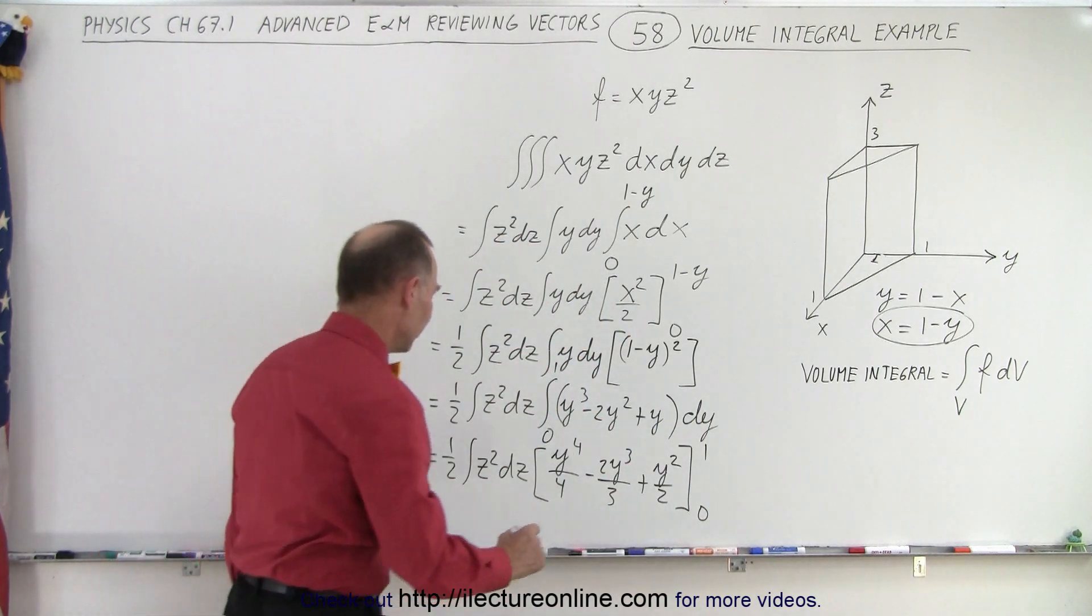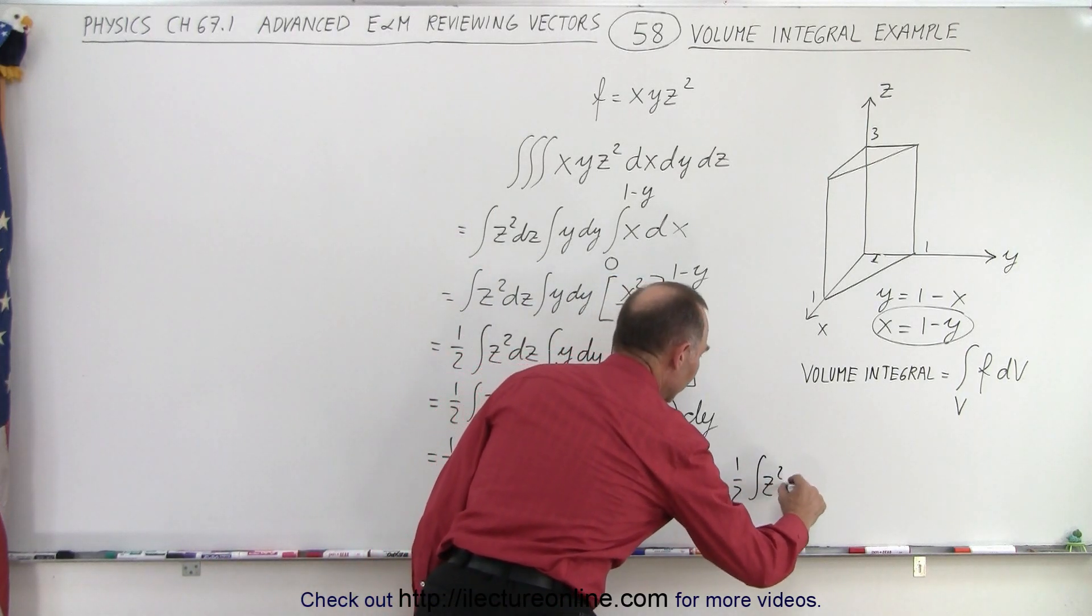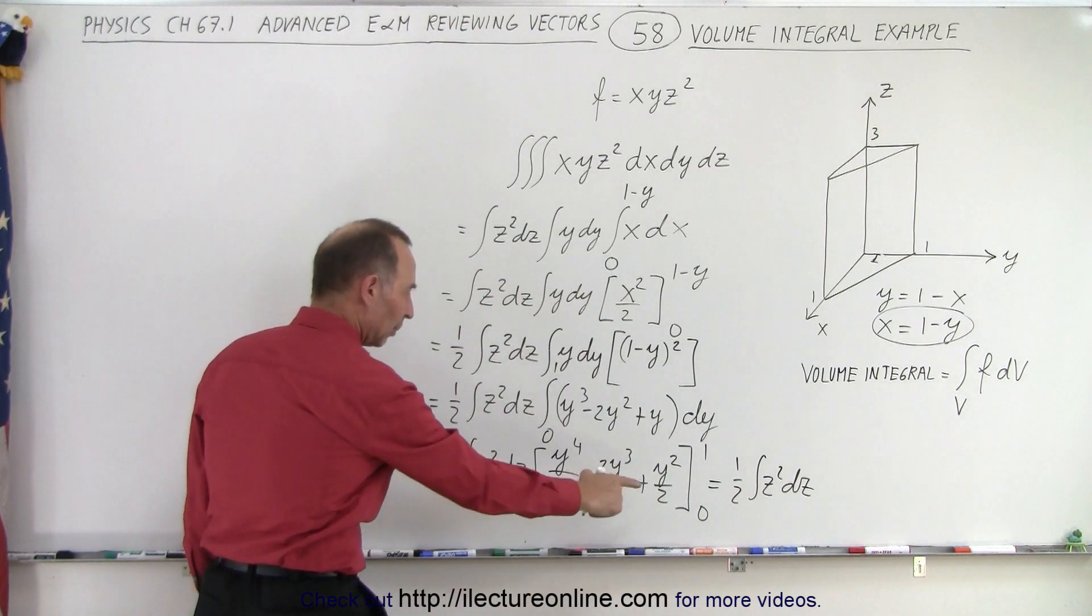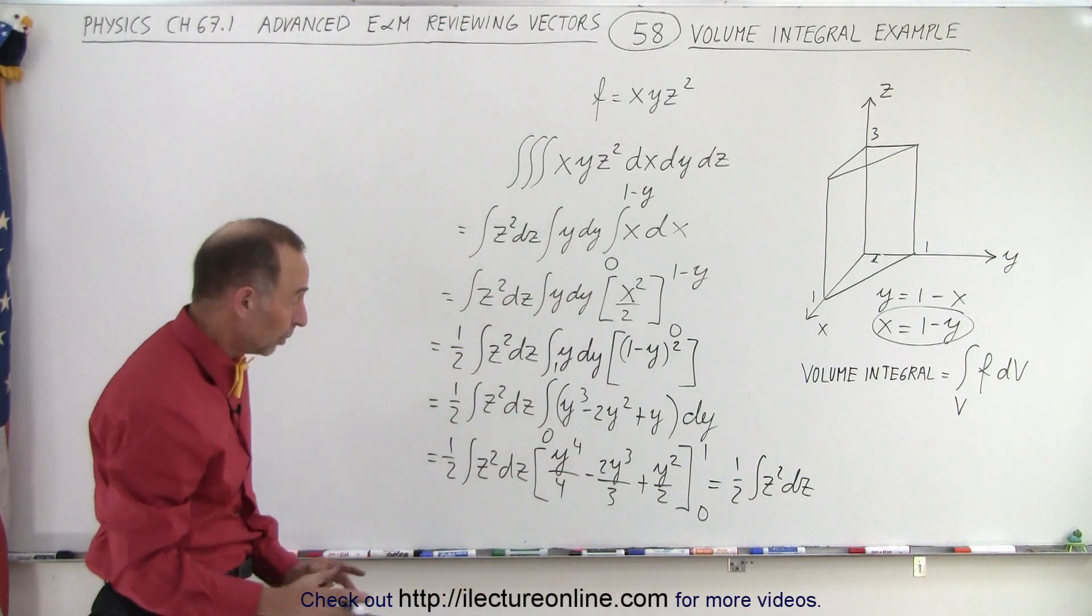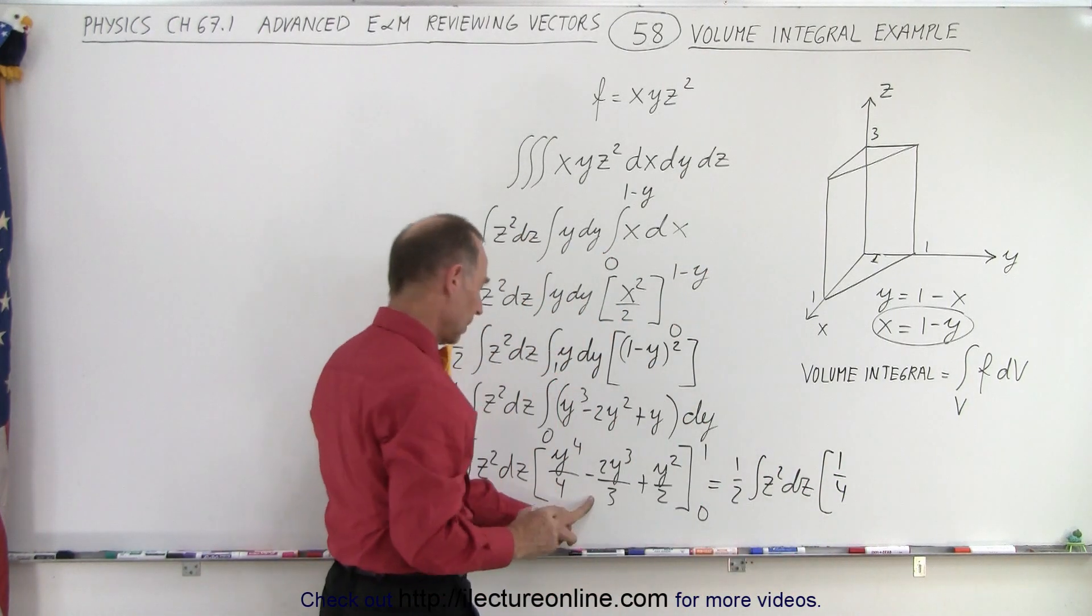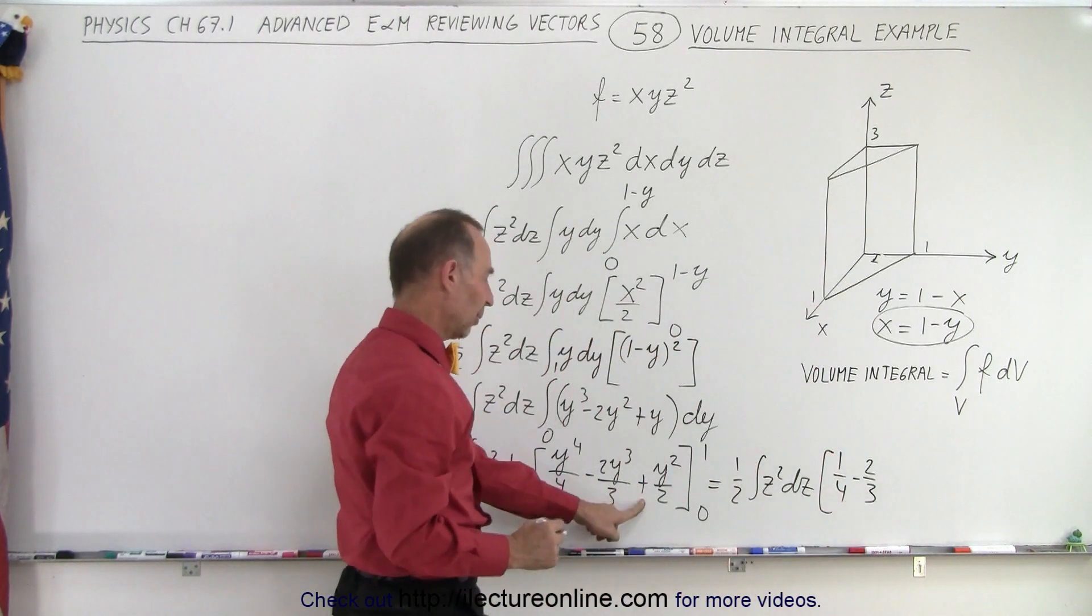All right, when we do that, we get the following. This is equal to 1 half times integral of z squared dz. So that's the same as what we have over here. And then here, plug in the lower limit, again we get 0, plug in the upper limit, we get 1 fourth minus 2 thirds and plus 1 half.